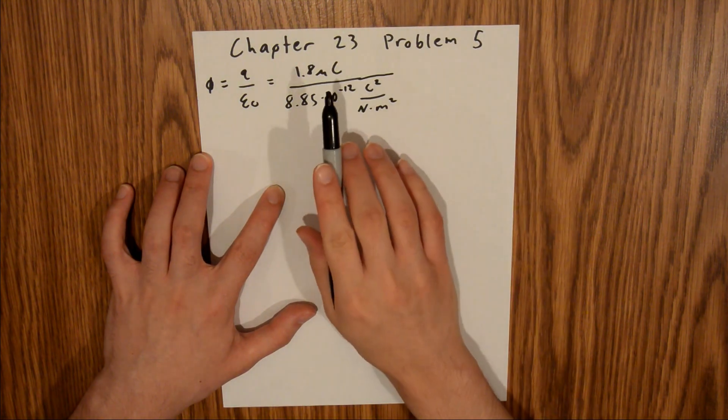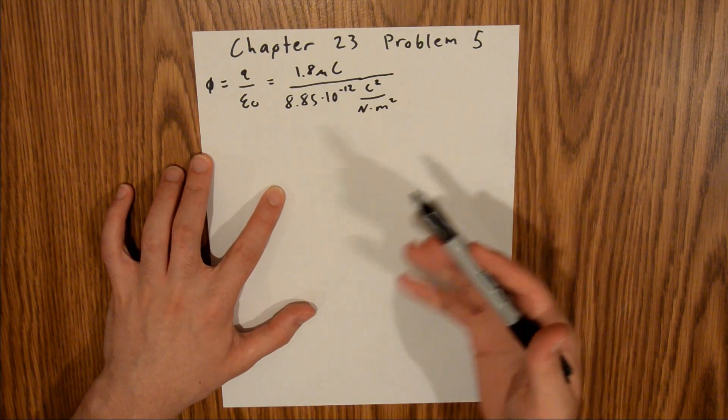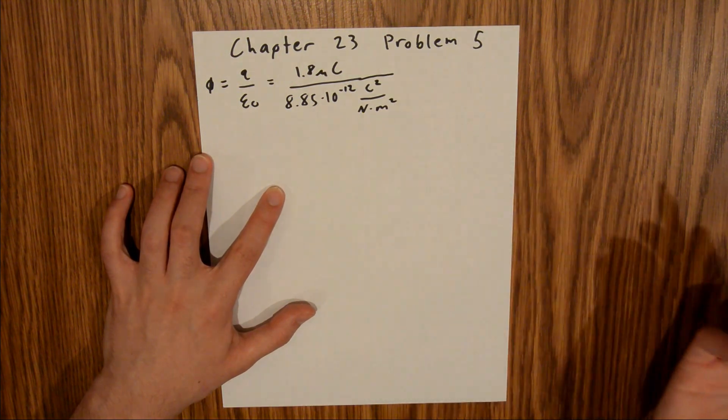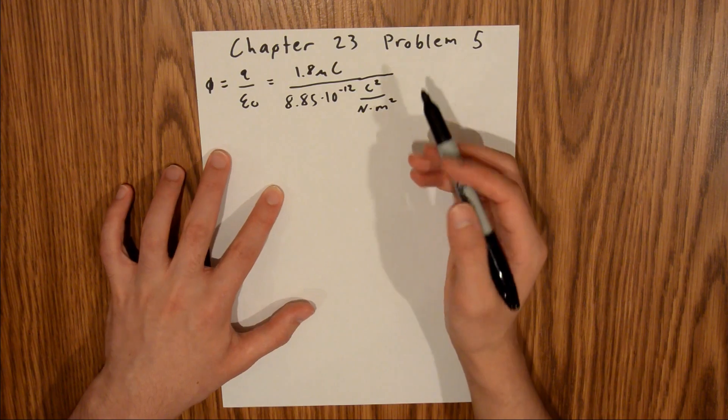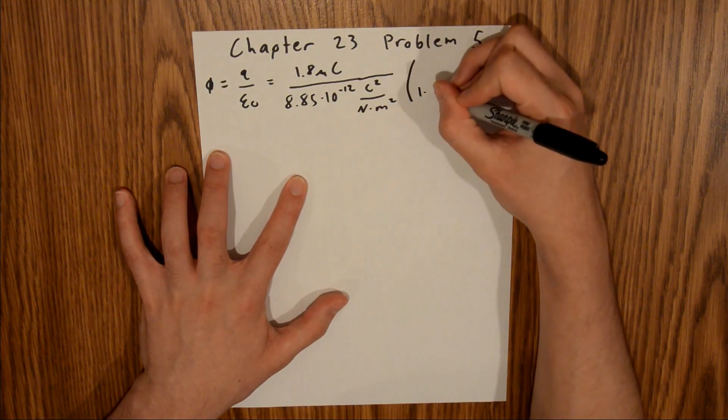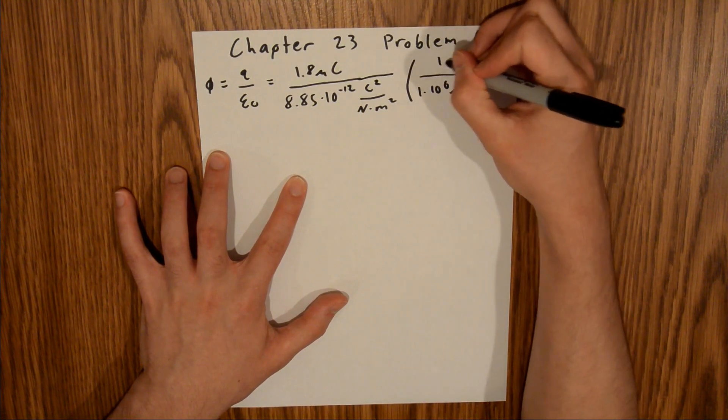Since we have microcoulombs up here and coulombs down here, we need to convert one of them into the other unit, and it makes more sense to use standard units, so we're going to convert microcoulombs into coulombs. The conversion factor is 1 times 10 to the sixth microcoulombs in 1 coulomb.